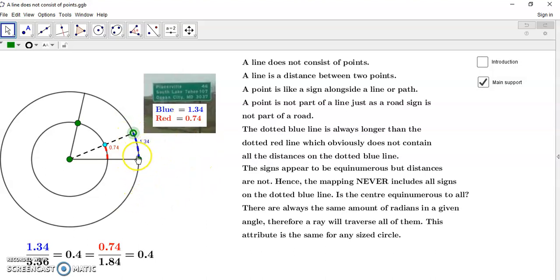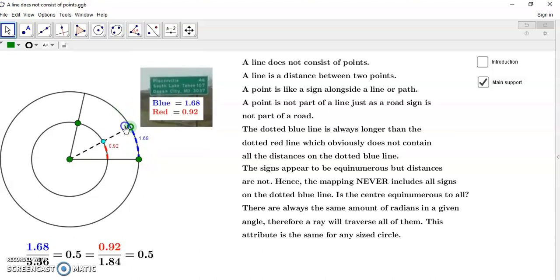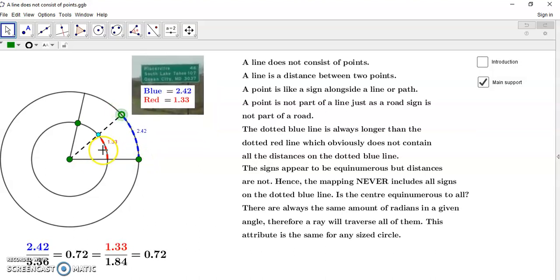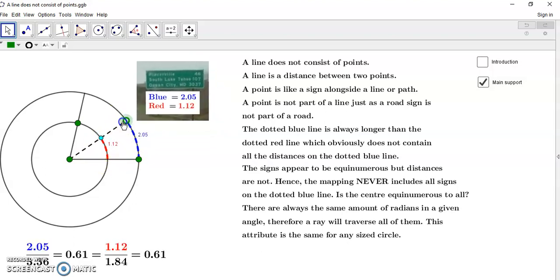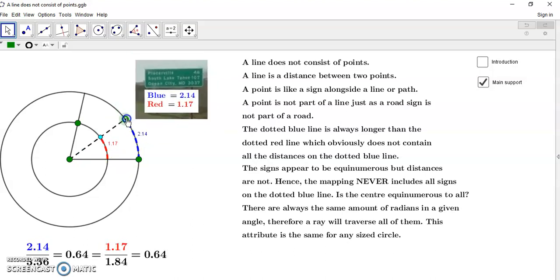This point is not part of the line or the road, just as a road sign is not part of a road. The dotted blue line—this one that you see here—is always longer than the dotted red line, which obviously does not contain all the distances on the dotted blue line. So this line here does not contain all the distances on the dotted blue line. The signs appear to be equinumerous, meaning that the flags or the markers on this smaller circle are the same as the markers on this circle. Well, that's no surprise because for any given circle, an angle contains the same amount of radians. And a ray, such as this dotted black ray here, will traverse all of them in exactly the same way. So this attribute is the same for any sized circle.